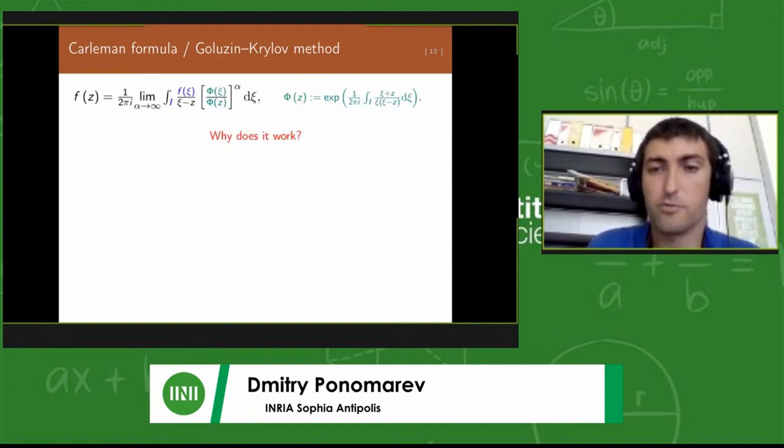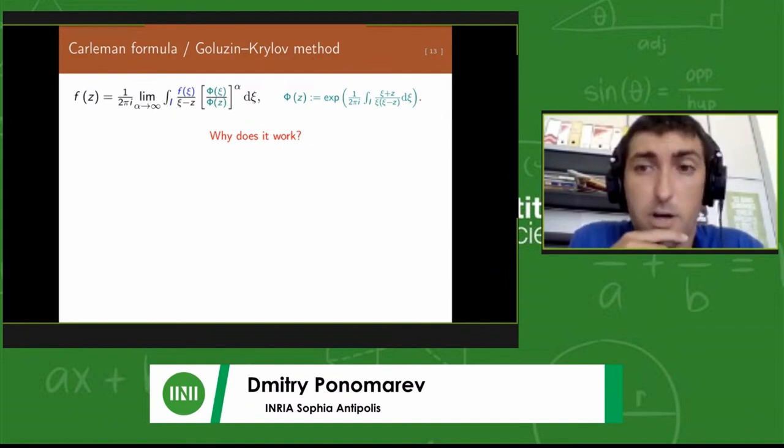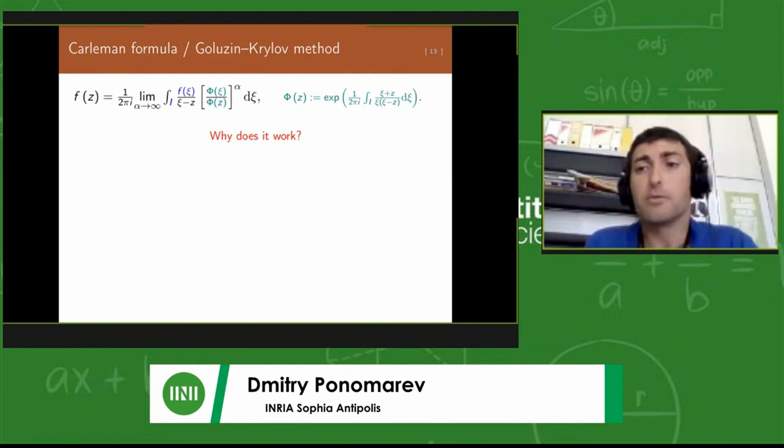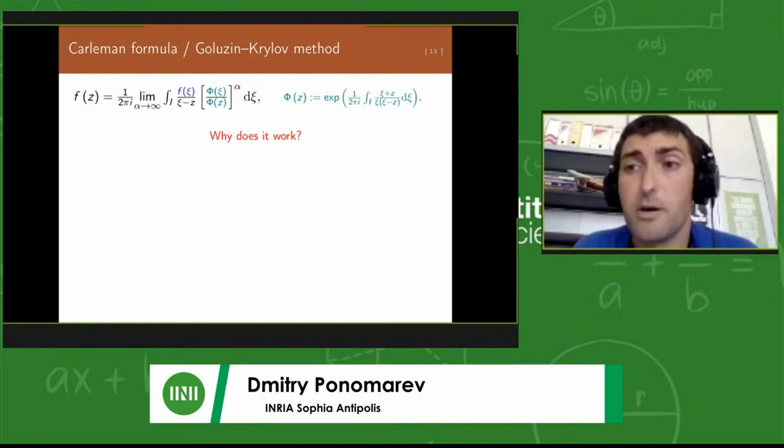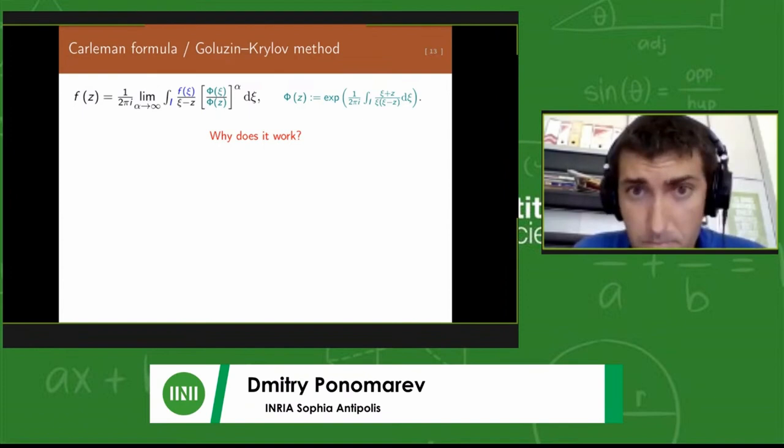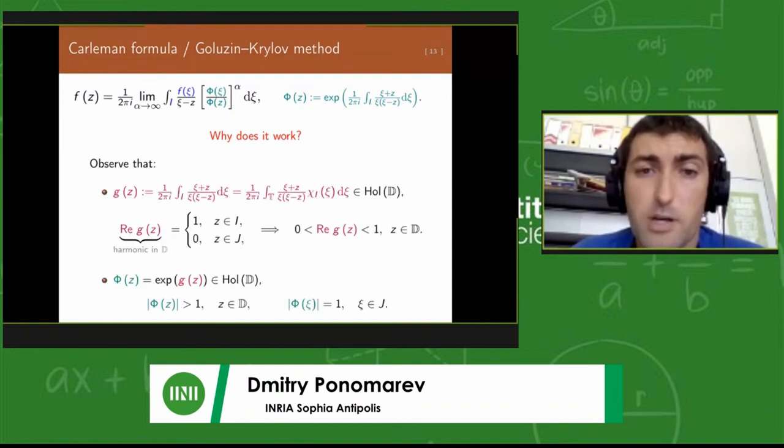Its role is to suppress the behavior in the representation formula, almost suppress the behavior of the integrand on the unknown part, on the part of the boundary where f is not known. It's constructed for these reasons. Since what I will tell you next can be related to this Carleman formula, I think it's meaningful to spend a minute or two to show you why it actually works.